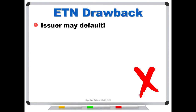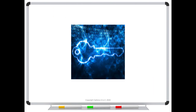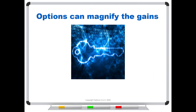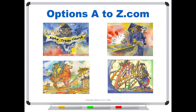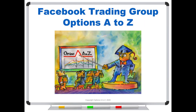Hopefully that gives you some insights into the advantages and disadvantages of ETFs and ETNs. No matter which one you choose, options can magnify the gains and reduce the losses. If you'd like to learn more about the art and science of options trading, please check out the AlphaTrader course and Strategy Lab at optionsAtoZ.com. You can also find mini-courses such as the Greeks and Volatility. Please also join us on the Facebook trading group Options AtoZ — you can find the link in the description below. We'll see you next time.